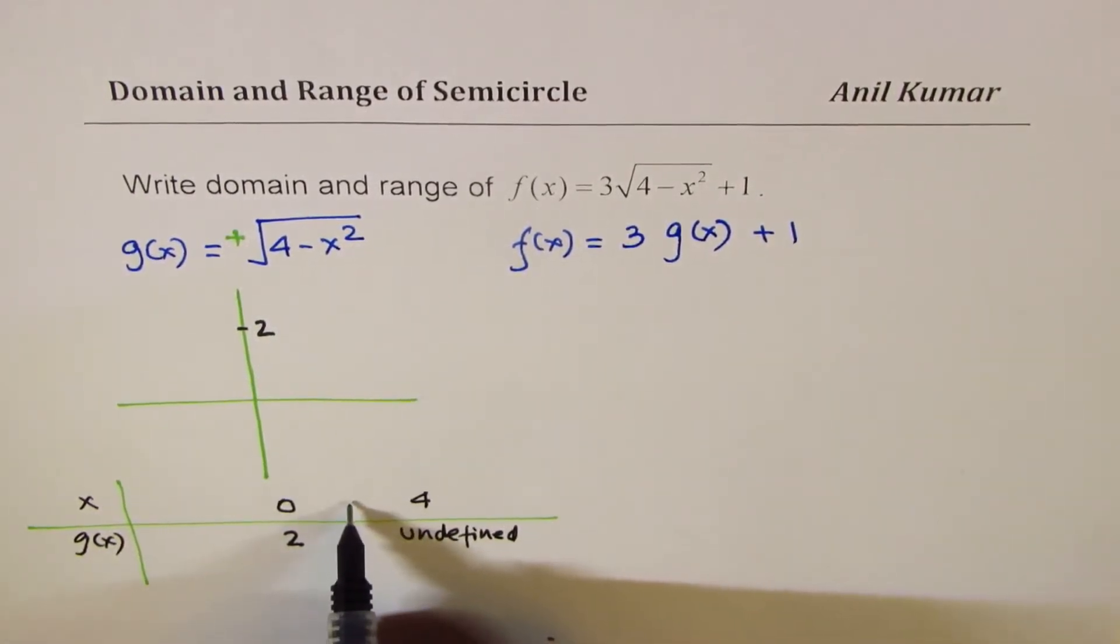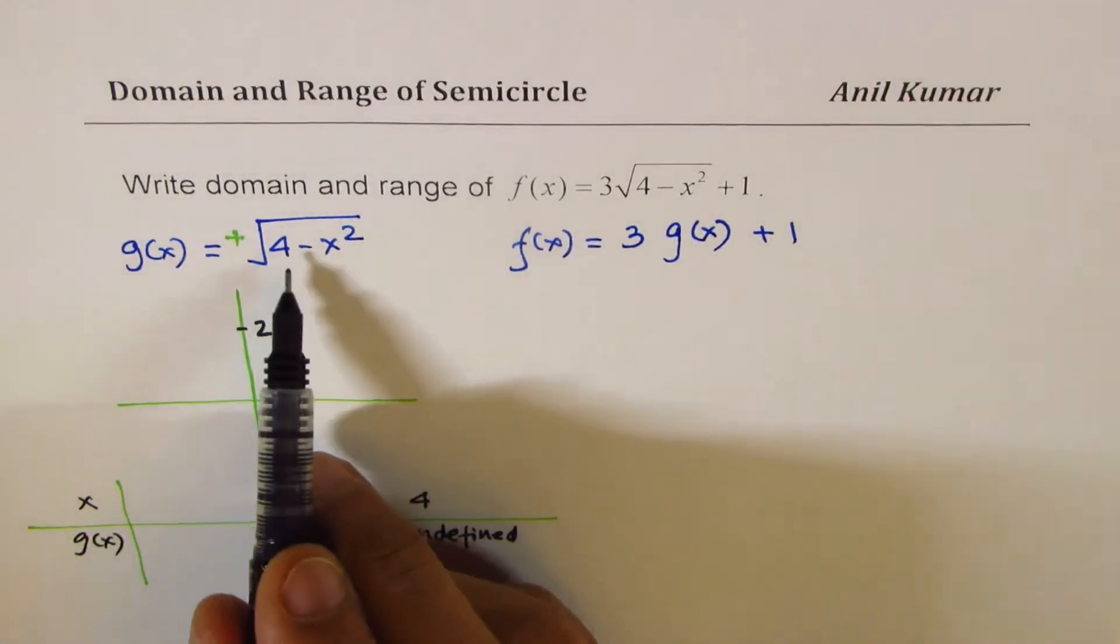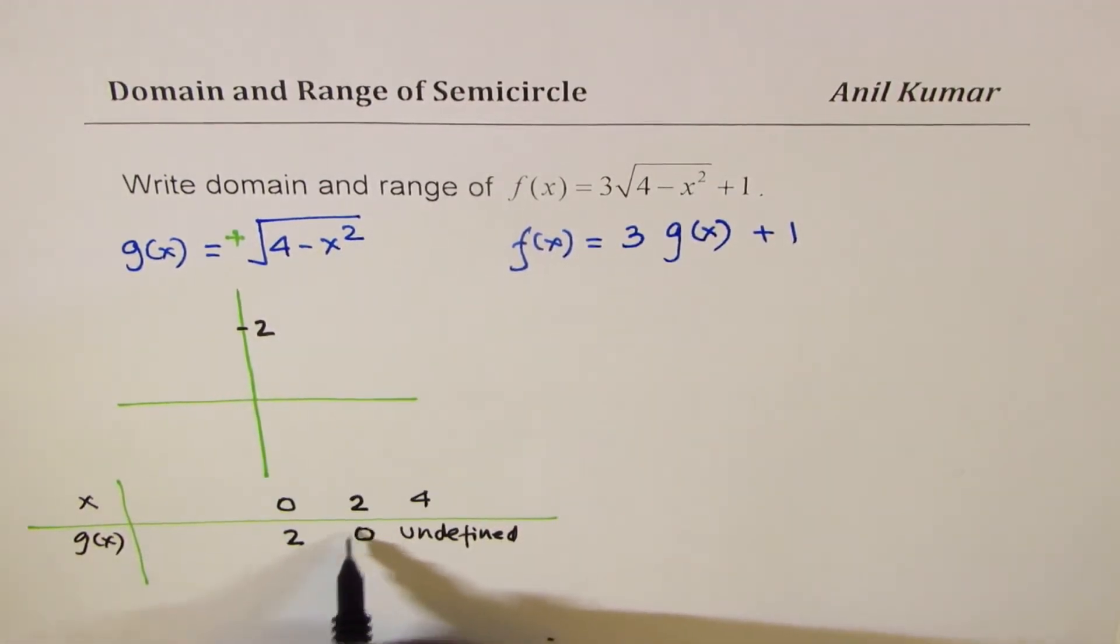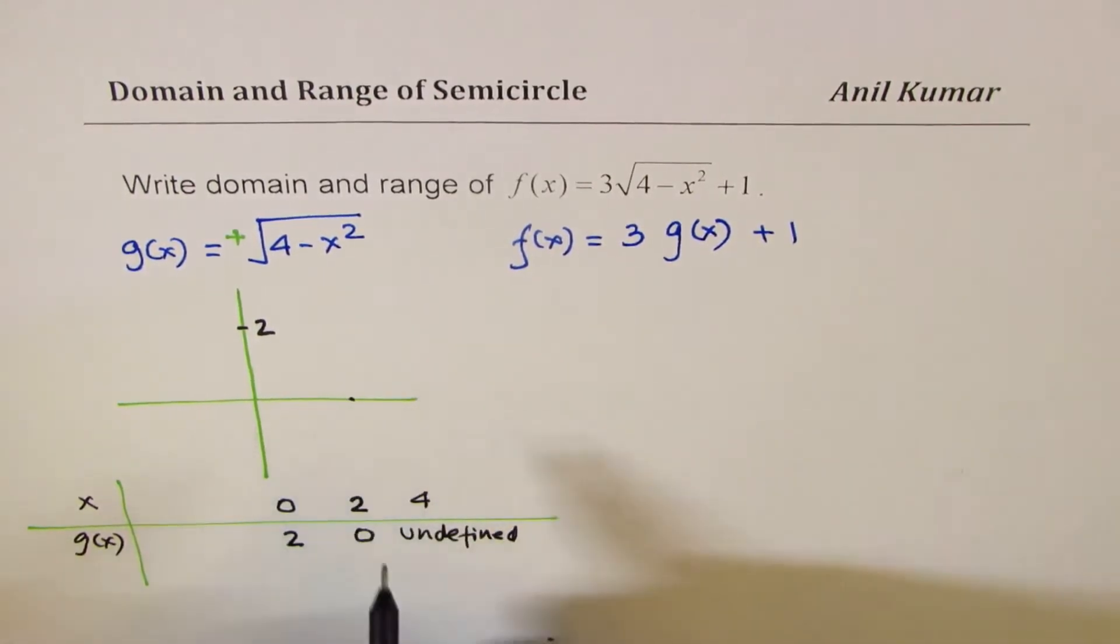However, if I take a value 2, then I get 2 square and g(x) is 0. So that is the limit, right? So we could not go beyond 2. So at 2, we have 0.